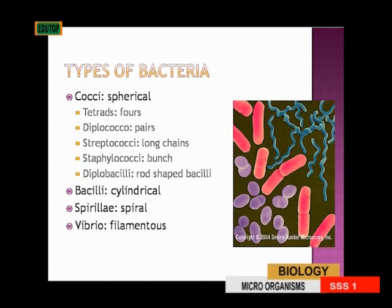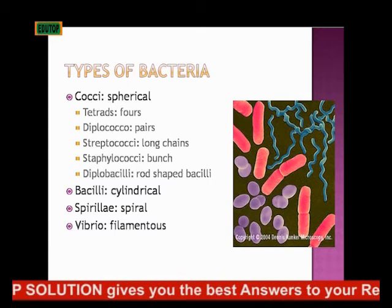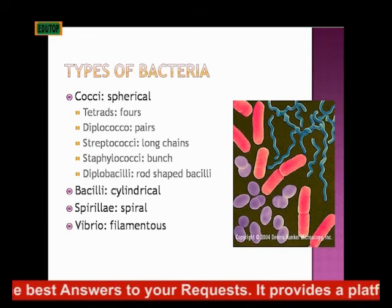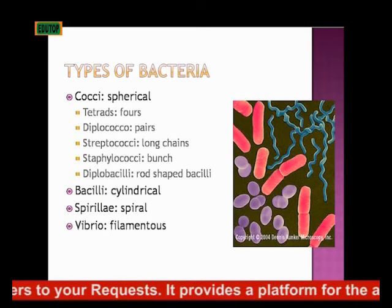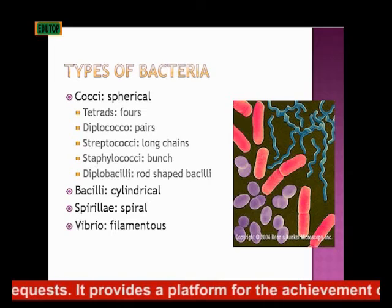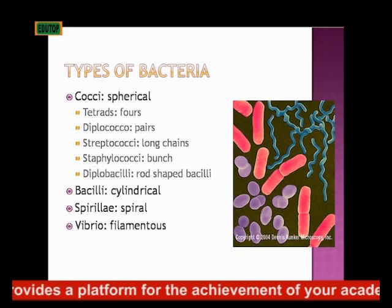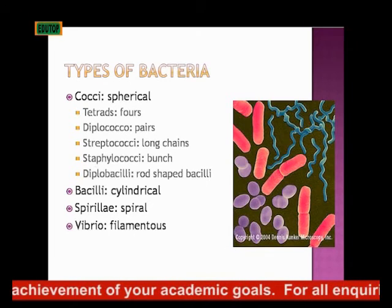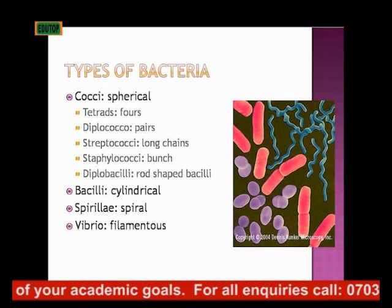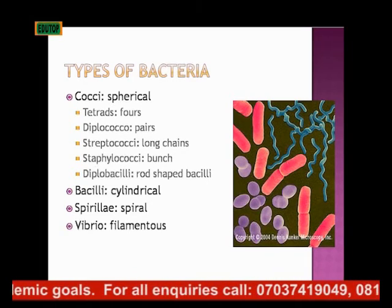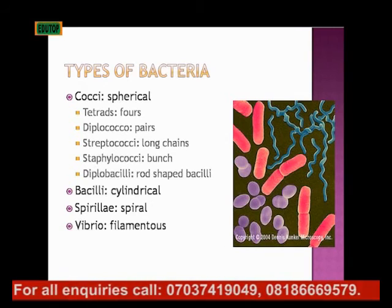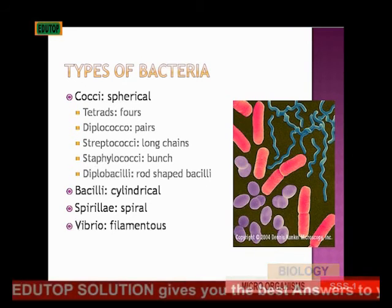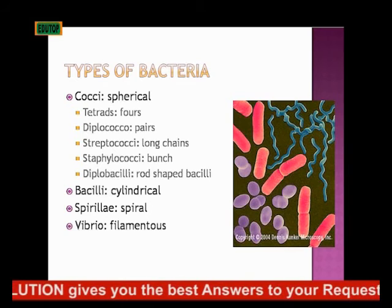Those are diplococcus. We have the streptococcus — the long chain spherical bacteria. Then we have the staphylococcus, which you might have heard about — it's the more popular group, shaped like a bunch of spherical bacteria. We also have the diplobacilli, which are rod-shaped bacteria. Then we have the bacilli, and the spirilli — those that are spiral in shape. Then vibrio, those that are filamentous in nature. All of them are bacteria but in different shapes and sizes.